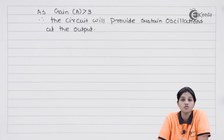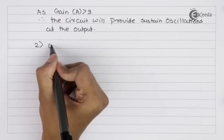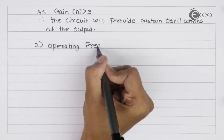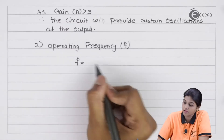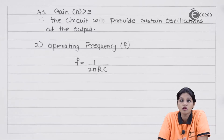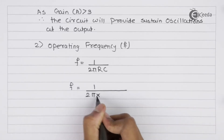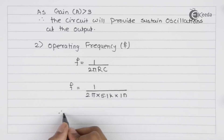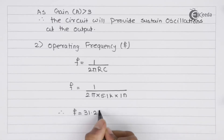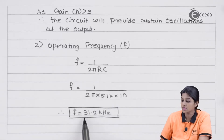The second part of the problem is to find the operating frequency. The operating frequency depends on the values of R and C and is given by F = 1 / (2πRC). Substituting the given values of R = 5.1 kΩ and C = 1 nF, we obtain the operating frequency as 31.2 kHz.